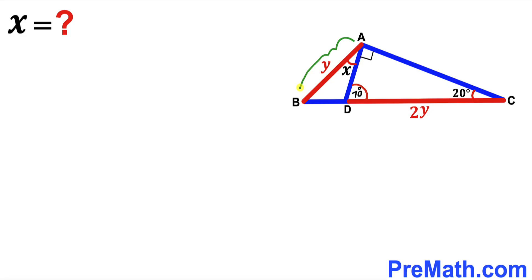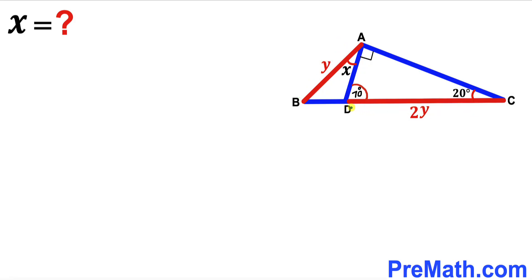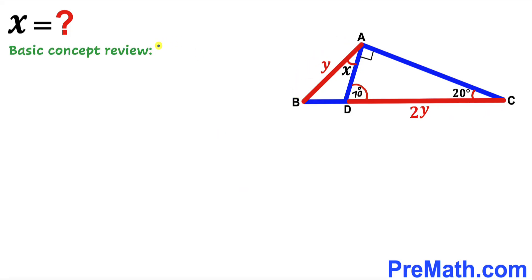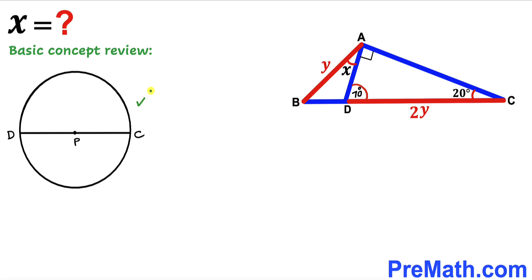Now let's make an observation: side AB has length Y and segment CD has length 2Y. In other words, CD is twice the length of AB. We are now going to go over a basic concept.